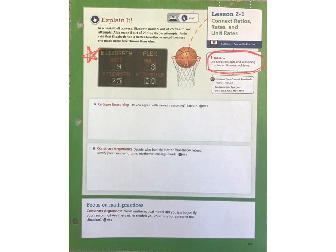So we have a couple of things to consider here. One of them is critiquing Janie's reasoning — do you agree with Janie? Explain why or why not. In Part B, we're going to look at constructing an argument. Decide who you think had the better free throw record and justify your reasoning with mathematical arguments.